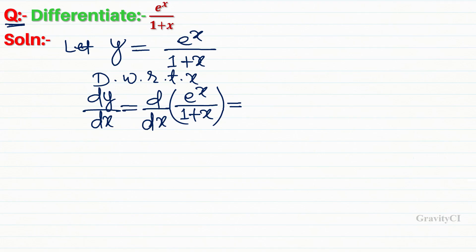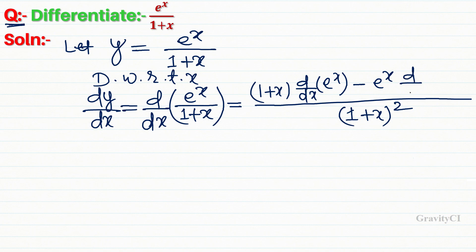Using the quotient rule: 1 plus x times the derivative of e to the power x, minus e to the power x times the derivative of 1 plus x, all upon 1 plus x whole square.